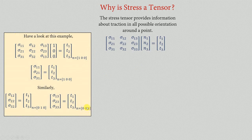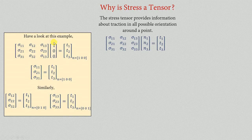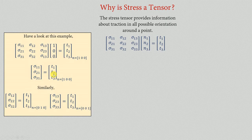Suppose we are working in some e1, e2, e3 basis. These are the components of the stress at a point in that coordinate system. We want to find out the tractions on a plane that is perpendicular to the (1, 0, 0) direction — a unit basis vector. After multiplication, we see that Sigma_11 equals T1, Sigma_21 equals T2, and Sigma_31 equals T3.